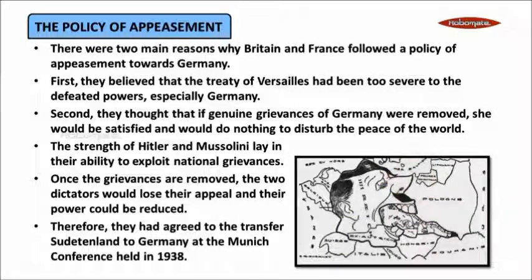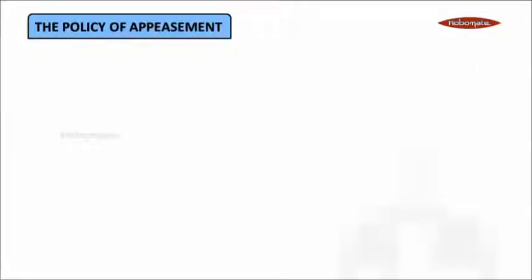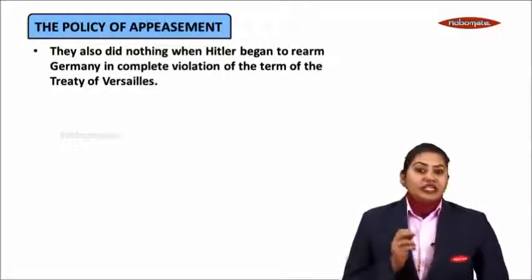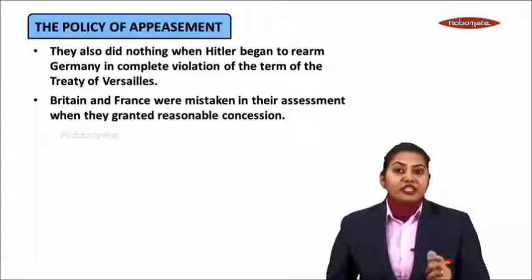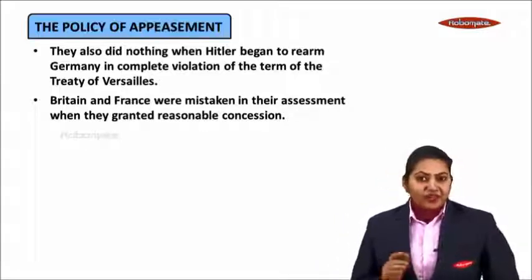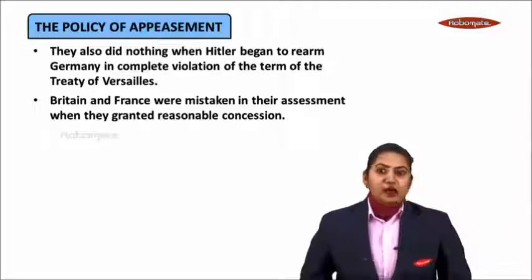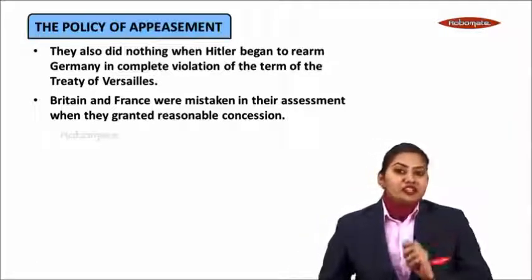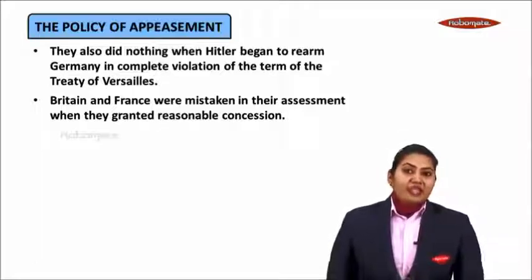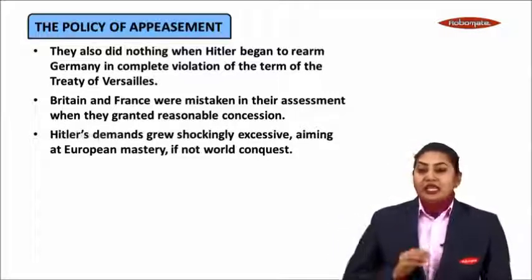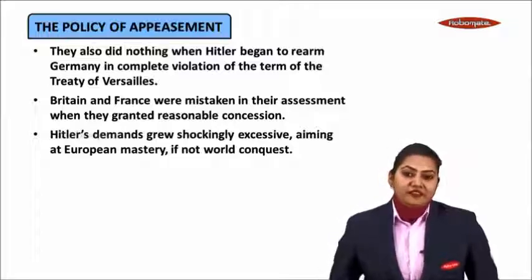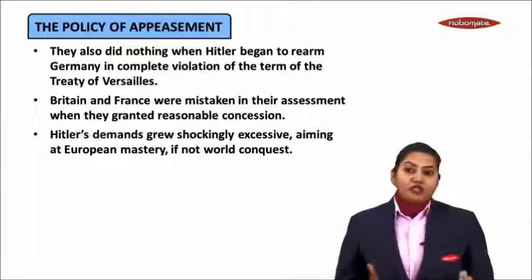Therefore, they agreed to transfer the Sudetenland to Germany at the Munich Conference, which was held in 1938. They also did nothing when Germany began to re-arm in complete violation of the terms of the Treaty of Versailles. Britain and France were mistaken in their assessments when they gave reasonable concessions to Germany. In actuality, Hitler was taking advantage of the modesty shown towards him, and Hitler's demands grew shockingly excessive, aiming at European mastery if not world conquest.